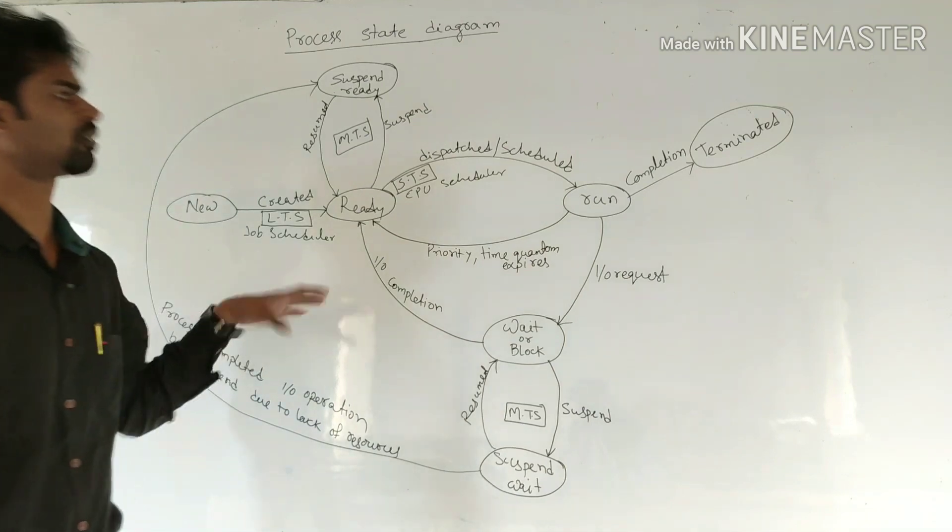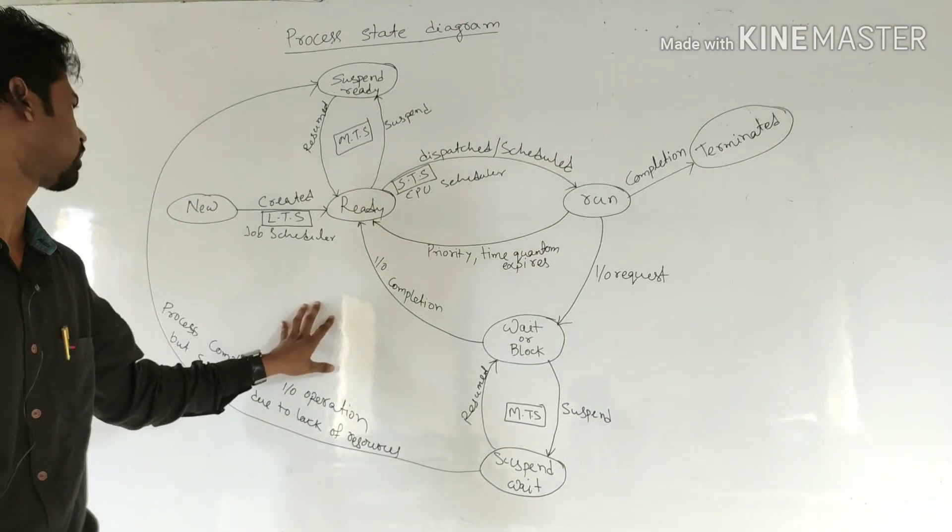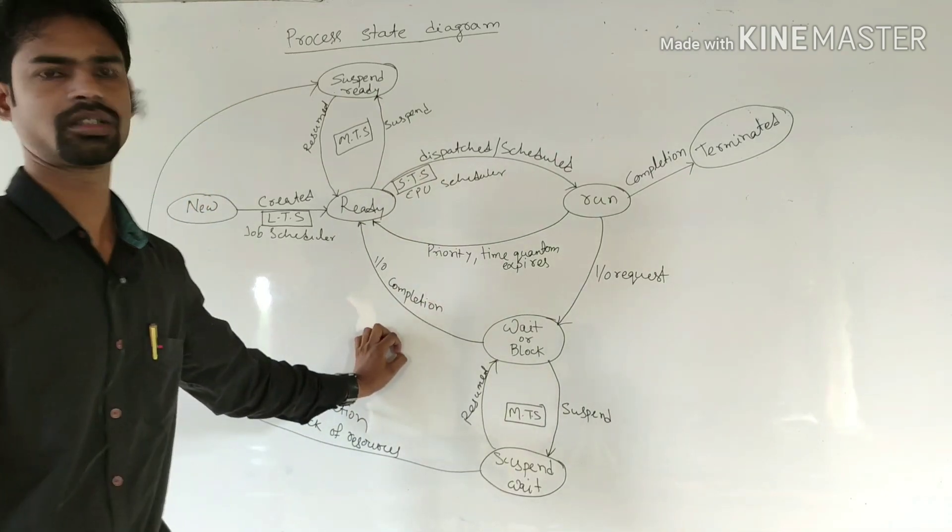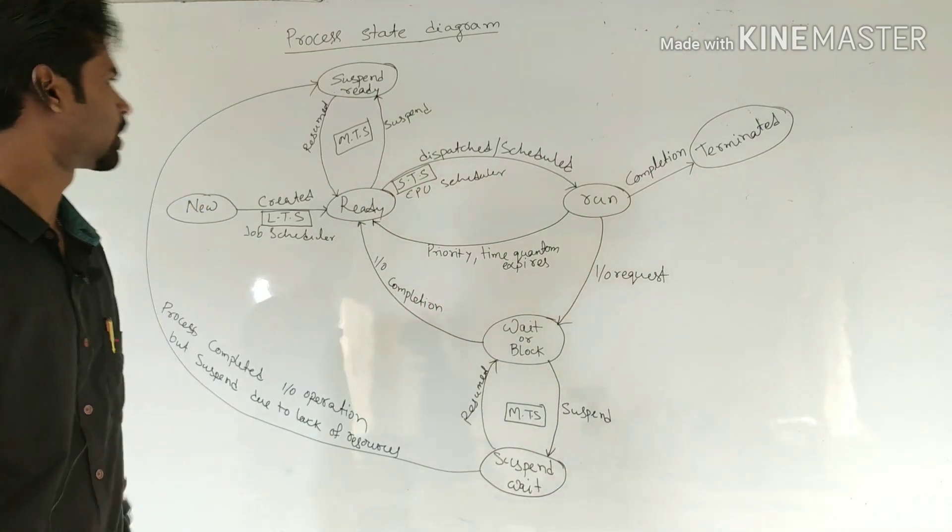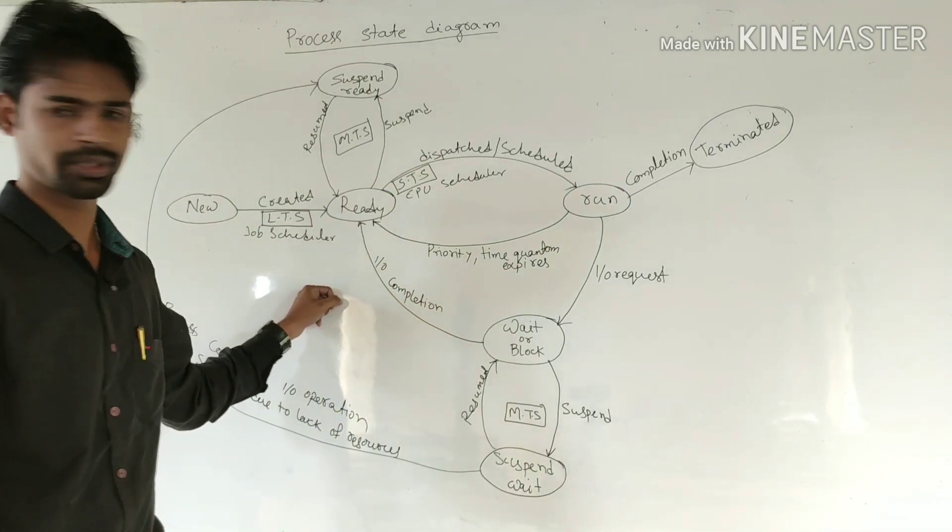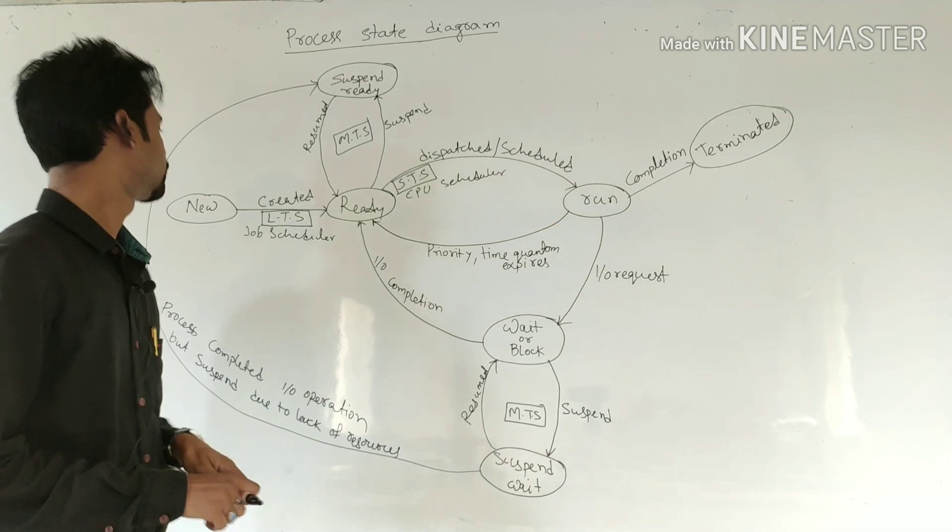There are majorly five states of a process: new, ready, running, waiting, and terminated. And another two states are suspend ready and suspend wait.